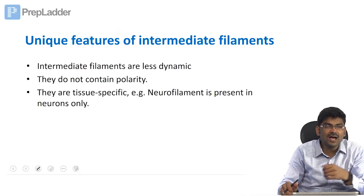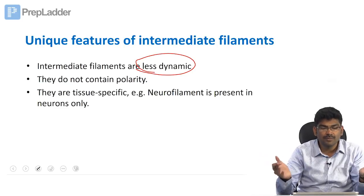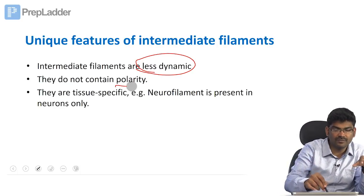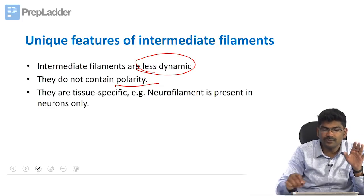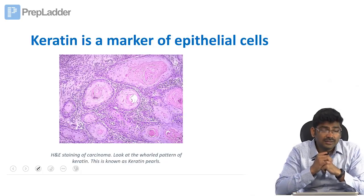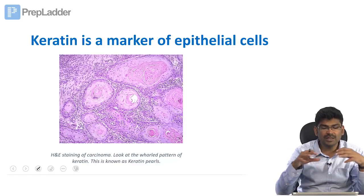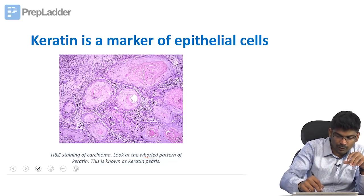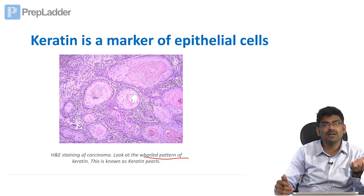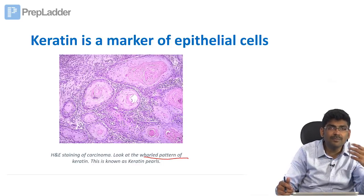Unique features of intermediate filaments: they are less dynamic — unlike actin and microtubules, they do not associate and disassociate; they are stable. They do not contain polarity, and they are tissue specific. Neurofilament is present only in neurons. These can be used as markers for cancers — they help in immunophenotyping. For example, keratin pearls are a marker for carcinoma (epithelial malignancy), and desmin is used for mesenchymal tumors.